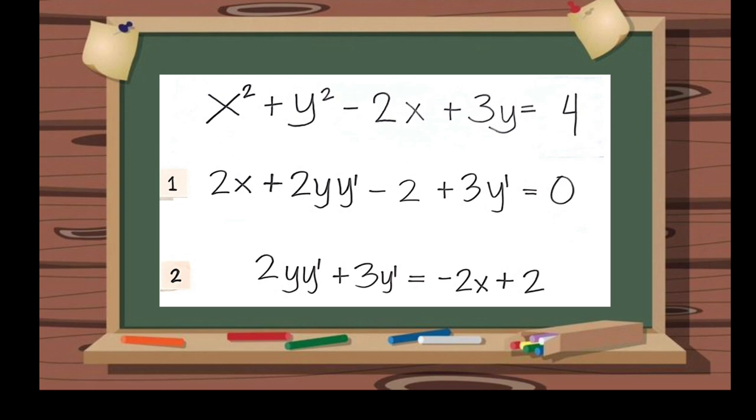As we transfer the values from left to right, the operation changes. So, 2x will be negative, and negative 2 will be positive 2.